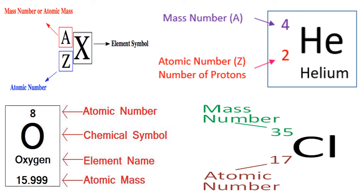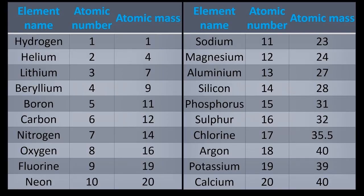Mass number is the number of protons plus the number of neutrons — both of which are in the nucleus and are called nucleons. So the mass number of an atom equals the mass of its nucleons, neglecting the mass of the electron. To represent this, we write the element symbol with the mass number at the top left and the atomic number at the bottom left. For example, Helium is written as He with its mass number on top and atomic number below.